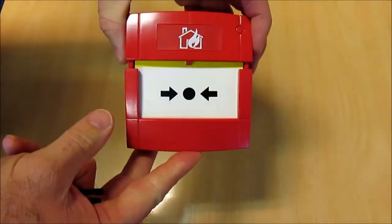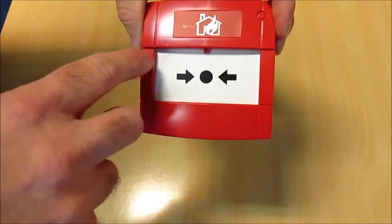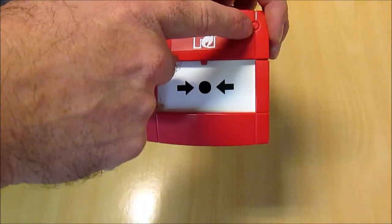To reset, you just push it and it's now reset. You can see that the yellow line is gone and if this were an addressable one, the red light would also extinguish.